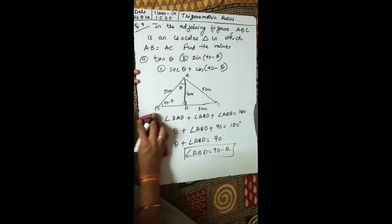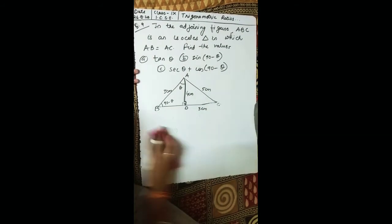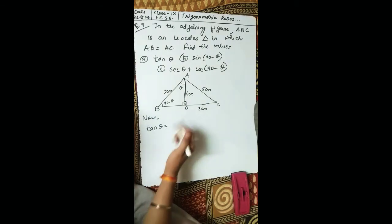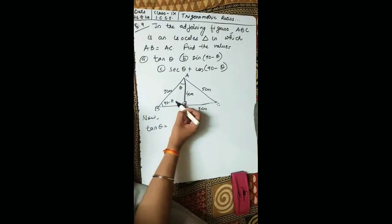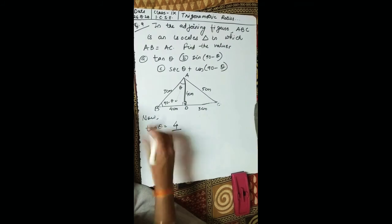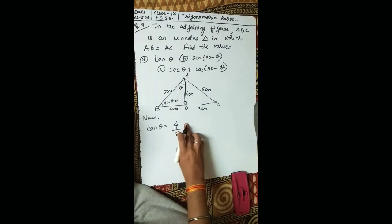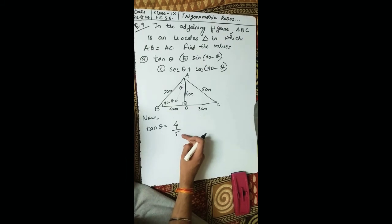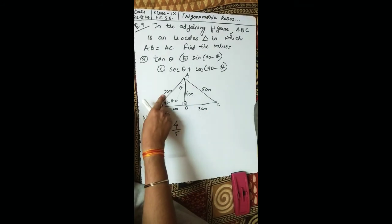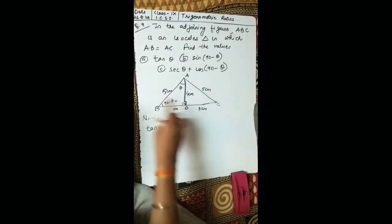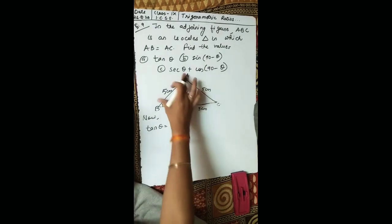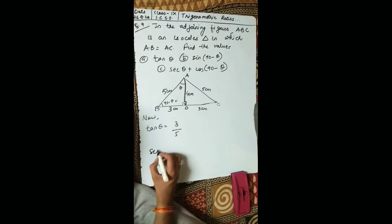Now, tan theta: the angle theta is at A, so the opposite side is the perpendicular. Looking at the values — this is 3, this is 5, and this is 4 — tan theta equals perpendicular upon base. The perpendicular is 3 and the base is 5, so tan theta equals 3 upon 5.